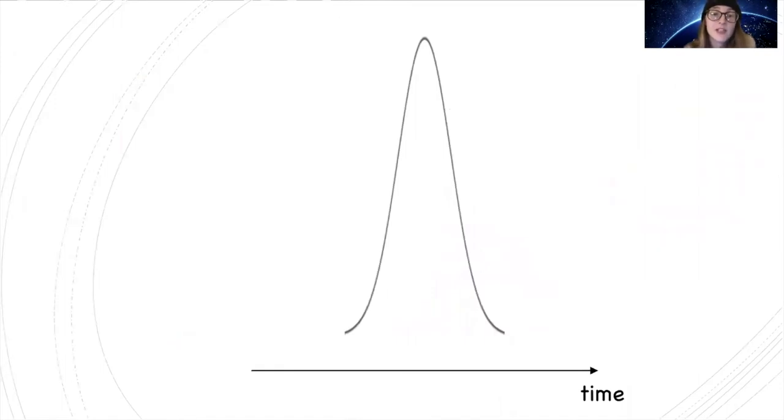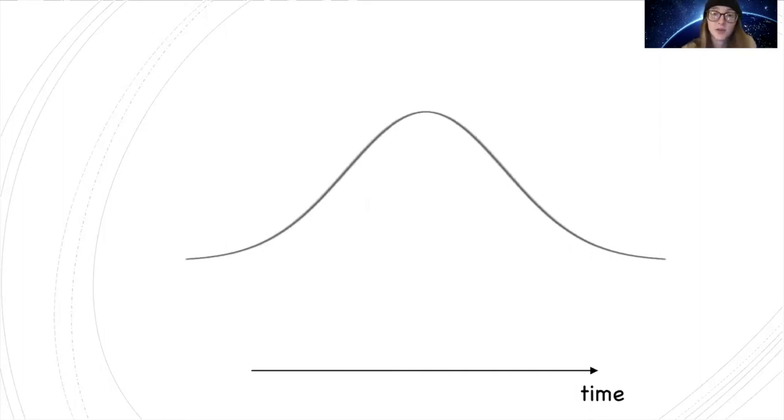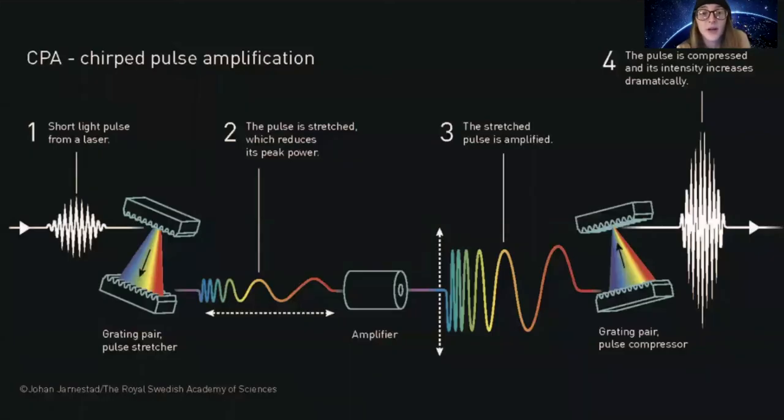Chirped pulse amplification utilizes an elegant approach to solve this issue. In this method, a short pulse of light is stretched in time by several orders of magnitude so that the average power stays the same, but the peak power is decreased. This is done by generating chirped pulses within which different wavelengths of light arrive at different times. Inside the laser, this is accomplished with a pair of gratings which diffract different energies of light so that different wavelengths arrive at different times. This serves to reduce the peak power per pulse.